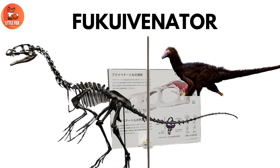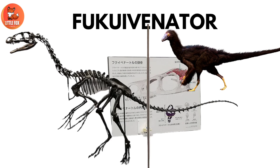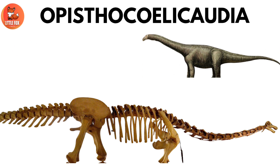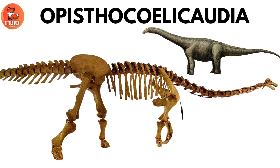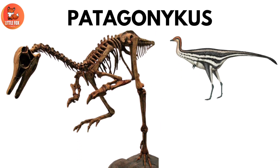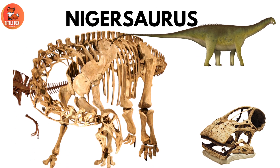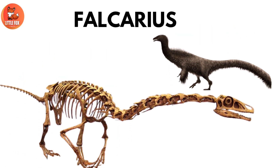Number 15: Fukuivenator. Number 16: Episthosilocatia. Number 17: Patagonacus. Number 18: Nigersaurus. Number 19: Falkirias.